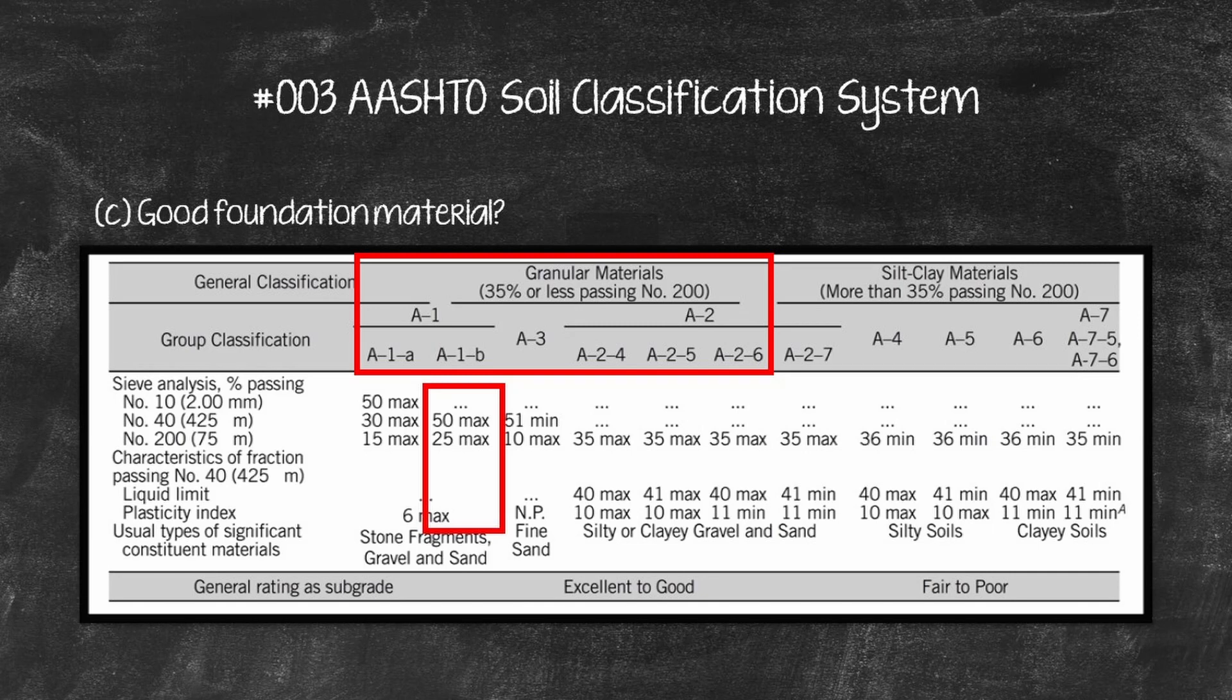C. According to Ashto table, A1B, 0, is excellent to good, and also generally the non-plastic material is not affected by swelling or shrinking, so this material is good for foundation material.